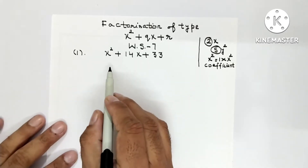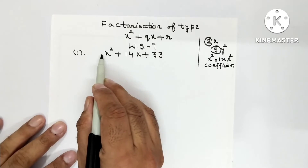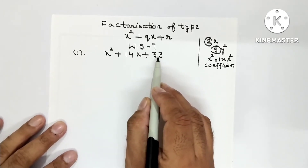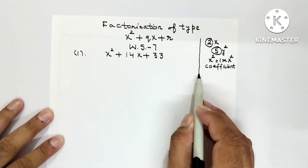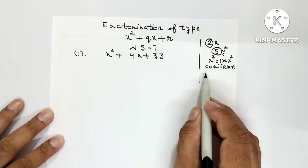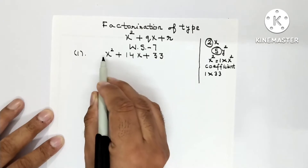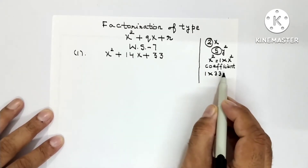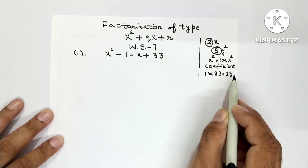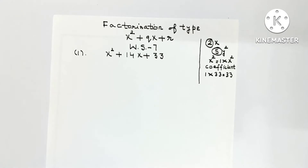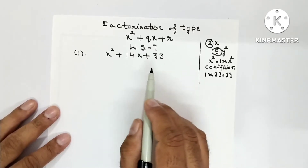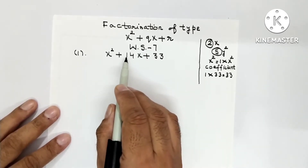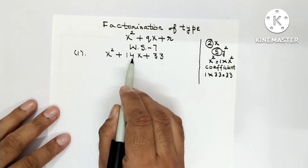In this question, the coefficient of x square is 1, and the constant term is 33. You have to multiply the constant term 33 with the coefficient of x square, which is 1, so 1 into 33 gives 33. Now think of two factors of 33 such that when multiplied they give 33, but when added or subtracted they give 14, which is the coefficient of x.